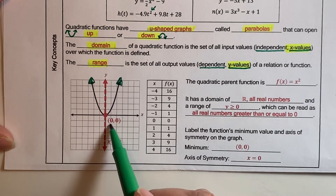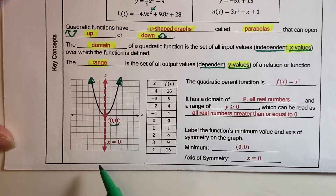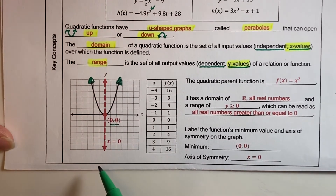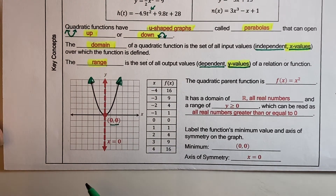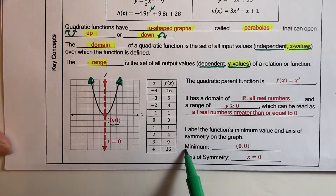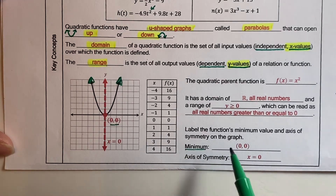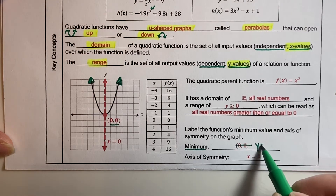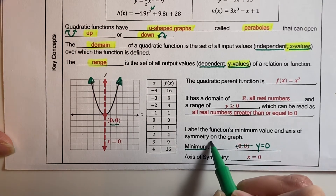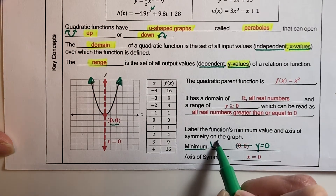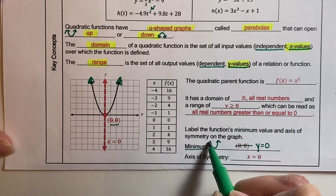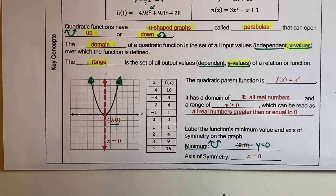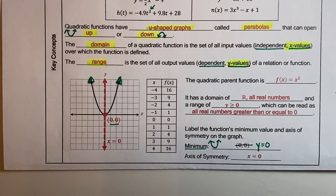The vertex is going to be at 0, 0, which is the highest or lowest point in your graph. The minimum will be the y value from your vertex, so y equals 0. It is a minimum because your graph is facing up. We'll learn about the axis of symmetry on Thursday.